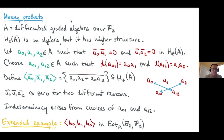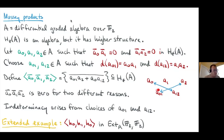In practice when computing Massey products, I write the three elements, then underneath a_0 and a_1 I write the element hitting their product, and underneath a_1 and a_2 I write the element hitting that product. Then I cross-multiply and add. The nice thing about that picture is it generalizes to higher products — for fourfold and n-fold Massey products you just make bigger triangles or lattices of things hitting other things.